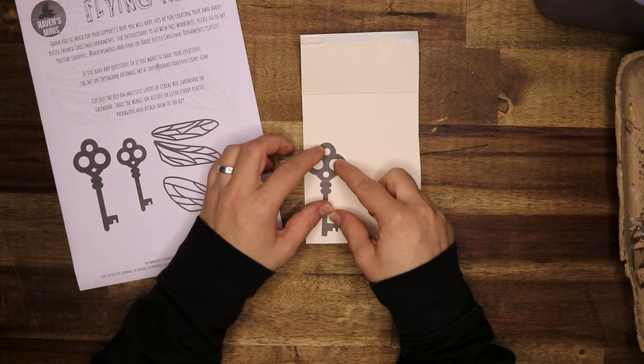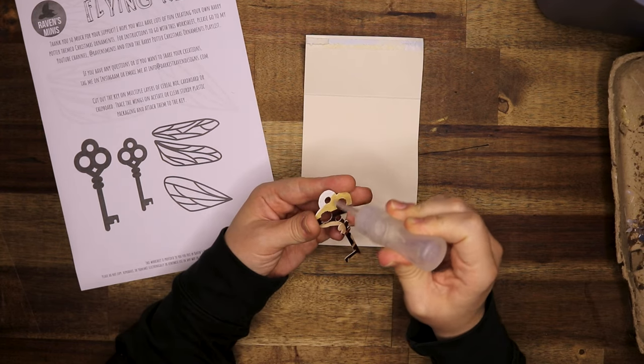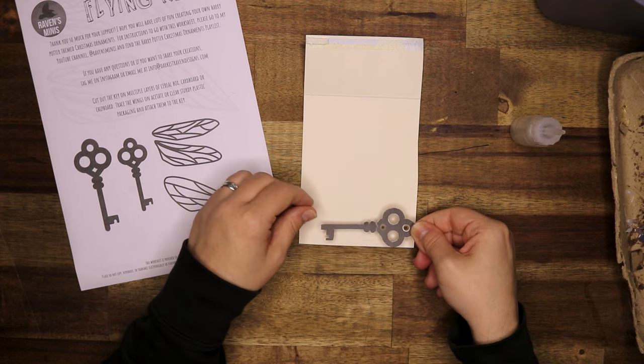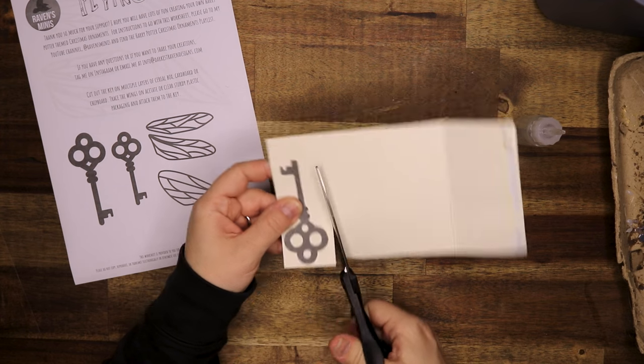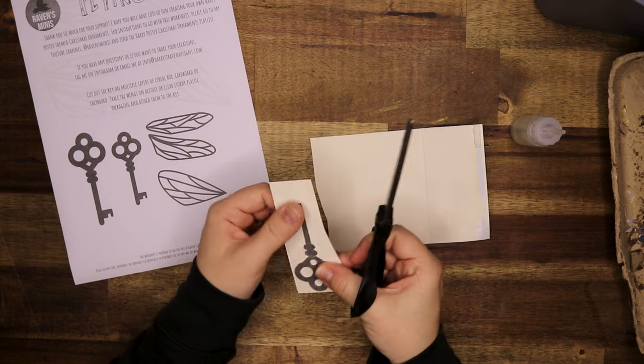I'm starting out by cutting out a key from cereal box. This is cut out once and I'm going to glue it on another piece of cereal box and cut it out again. The key you saw in the intro is entirely made from cereal box and hot glue.